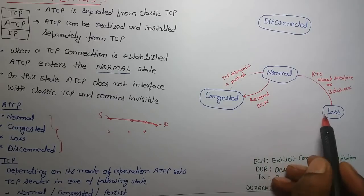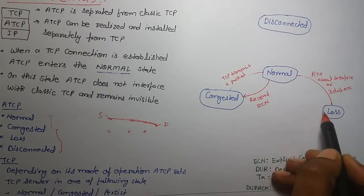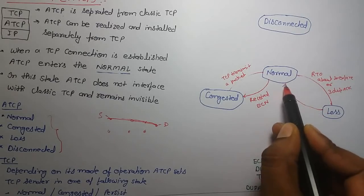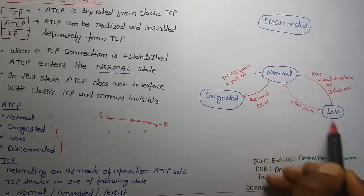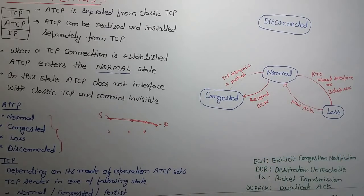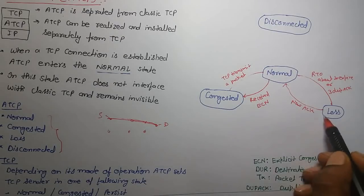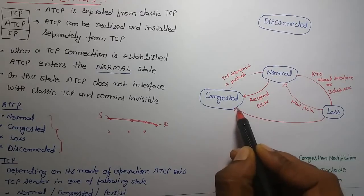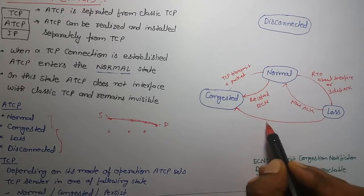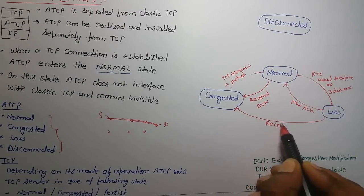If it is in lost state and a new acknowledgement is received, then it will move to normal state. And if it is in lost state and ECN is received, then it will move to congested state.